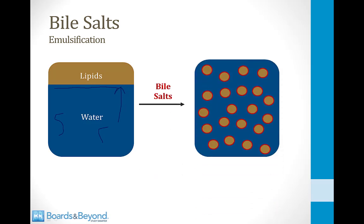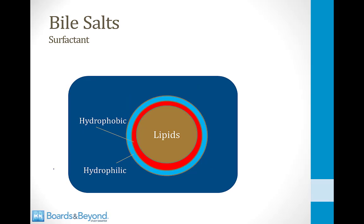Luckily we have bile salts. What bile salts do is emulsify the lipids — they suspend them in the water by surrounding lipid particles and dissolving them in water. This makes much more surface area for pancreatic lipase to work and aids in digestion. If we zoom in on one of those suspended lipid particles, what we would see is that the bile salt is surrounding the lipid particle and has two portions of its molecule.